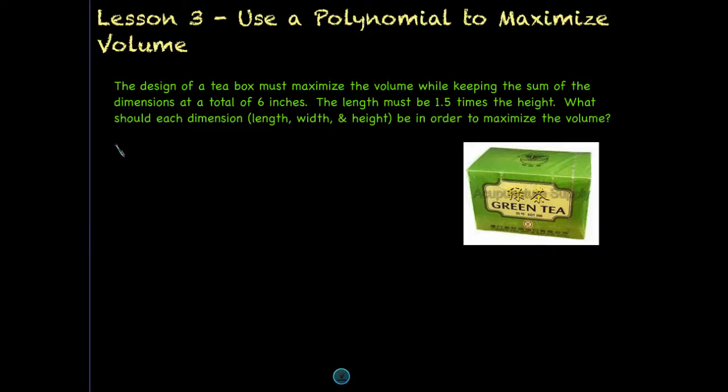So for some reason there is a constraint. And we have another constraint. The length must be one and a half times the height of this box. What should each dimension, length, width, and height be, in order to maximize the volume?